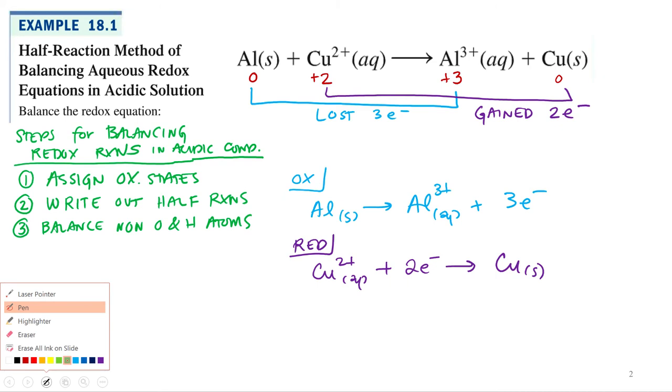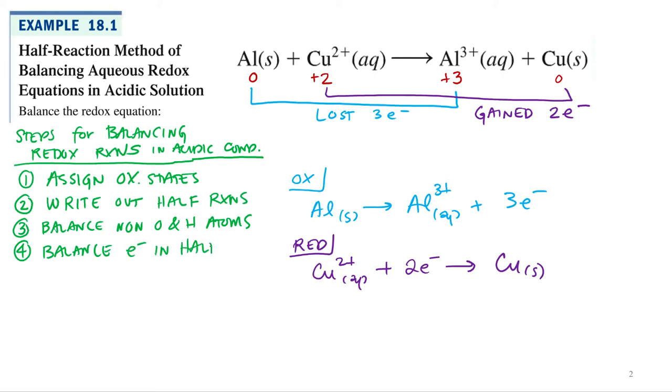Now we're going to balance the electrons in half reactions. How we do that is just multiply one or both of the half reactions to get the same number of electrons on both sides. Right now I'm losing three and gaining two, so I'm going to need to find the least common denominator, which would be six. I'm going to multiply this whole half reaction by two to get six electrons, and I'm going to multiply the whole copper half reaction by three to get six. And at that point in time, that's when I usually combine them.